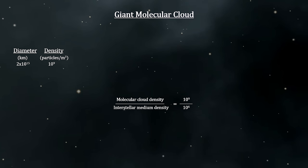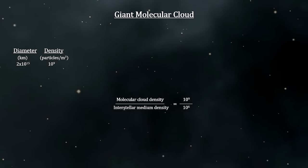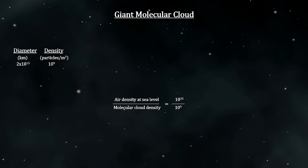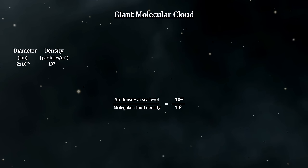The clouds are dense relative to the rest of the gas between the stars, the interstellar medium, but are still much less dense than the atmosphere of a planet. Typical cloud densities are around a billion molecules per cubic meter. That might sound like a lot, but each cubic meter of air at the surface of the Earth has 10,000 trillion times more than that.